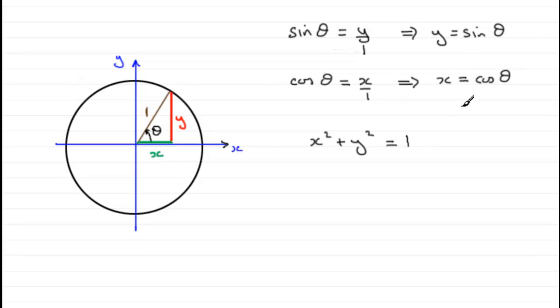But we know that x is cos theta. So cos theta, if we were to square it, plus y, which is sine theta, if we were to square that, would come to 1.